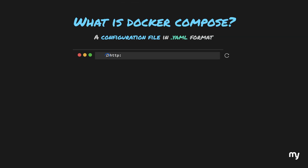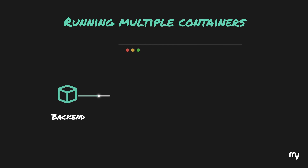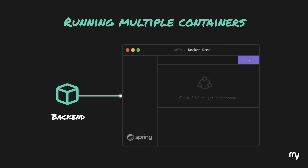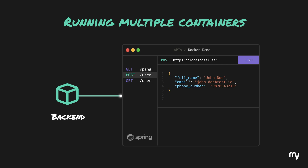Once the container starts running, you can open the frontend app via localhost and see the form. At this point, clicking test connection gives an error because the backend is not running yet. Our basic Spring Boot backend hosts a GET endpoint /ping which returns a simple JSON for testing, and a POST endpoint /user which consumes a JSON of name, email, and phone number, returning success or failure.